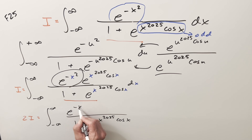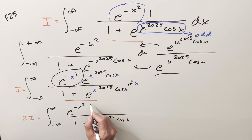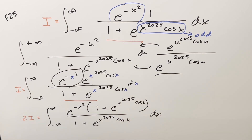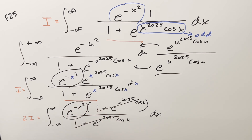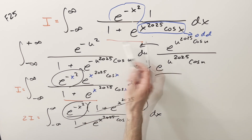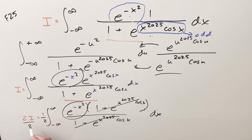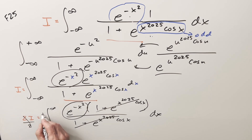When we add the numerators, we have the e to the minus x squared term in common, so we factor that out. This gives us e to the minus x squared times 1 plus e to the x 2025, times cosine x. That cancels with the denominator, and we're just left with e to the minus x squared. This is what I was referring to at the beginning — the odd exponent and even numerator cause everything else to cancel. We divide by 2, giving a one-half out front. With symmetric bounds, we can change the lower limit to 0 and bring a factor of 2 back, which cancels the one-half.